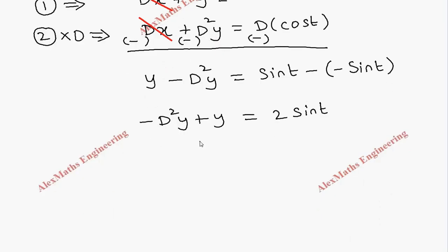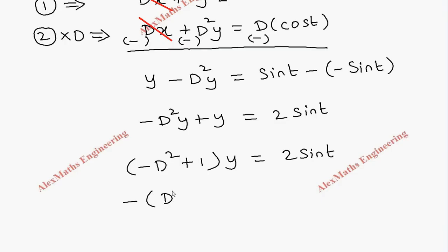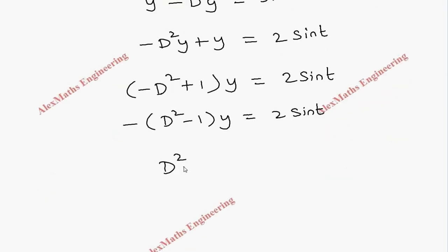Now we rearrange as minus D²y plus y equal to 2 sin t. Taking y common, it becomes (minus D² plus 1)y equal to 2 sin t. Taking minus sign common so that the first term is positive, we get (D² minus 1)y equal to minus 2 sin t.